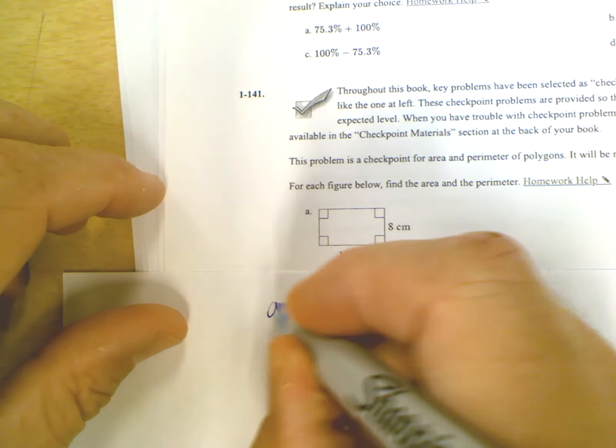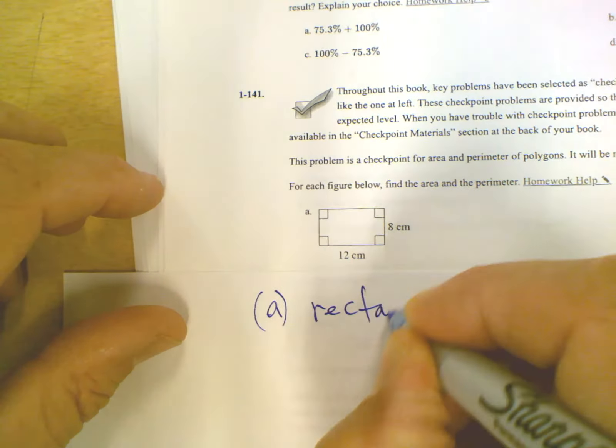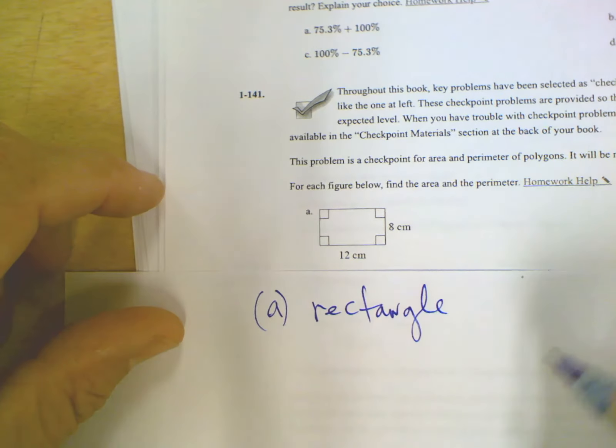First shape, A, what do we call that? A is a rectangle, so got to know the vocab as well.